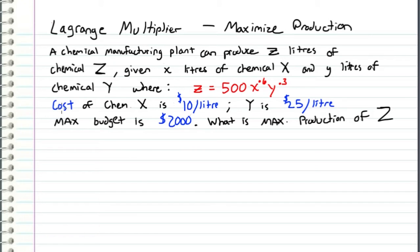Now we also have that the cost of chemical x is $10 per liter and the cost of chemical y is $25 per liter. And we also have a max budget of $2,000. And with this information we want to find the maximum production of chemical z. So how many liters of chemical z can we produce with our budget and given cost.